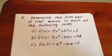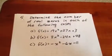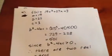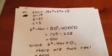In this question we want to determine the number of real zeros in each of the following cases. The first quadratic is f(x) = 19x² + 27x + 3.